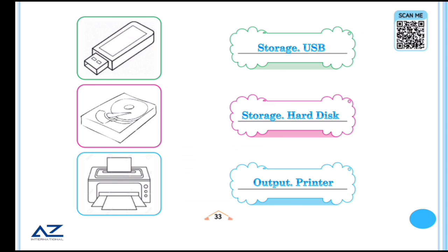USB is basically a storage device which you can store. Next, you have got a hard disk. Hard disk is also a storage device.